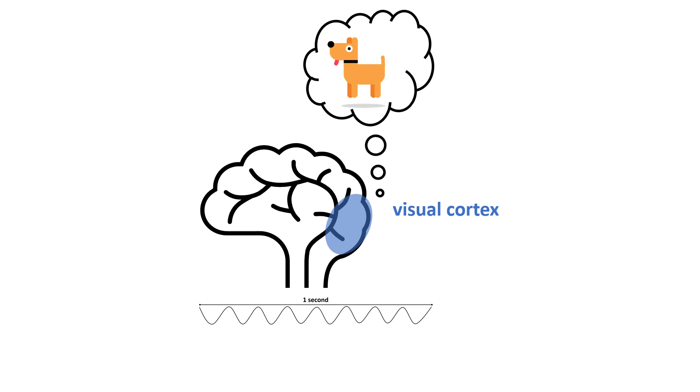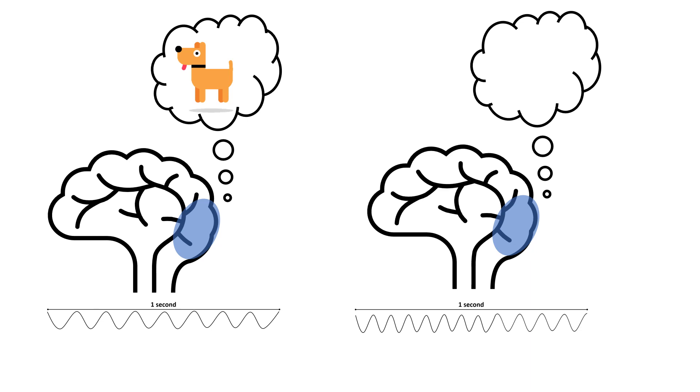The visual cortex is also used for imagery, and previous research has found that when people use vivid imagery, the flicker frequency of the visual cortex is lower. And when people are not imagining anything visually, the sampling frequency is higher. So you can see the difference between a brain during imagery and a brain during rest.